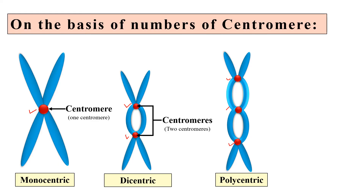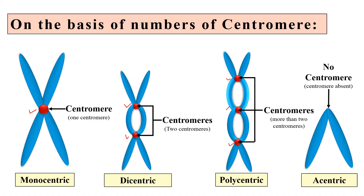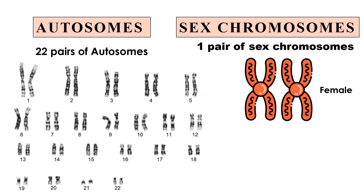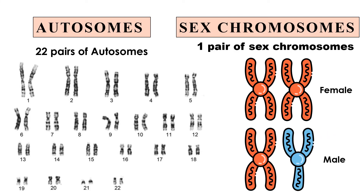Acentric chromosomes have no centromere at all, as you can see in the diagram where the centromere is absent. Regarding autosomes and sex chromosomes: humans have 22 pairs of autosomes. The sex chromosomes are X and Y — there is only one pair. Females have two X chromosomes while males have one X and one Y chromosome.